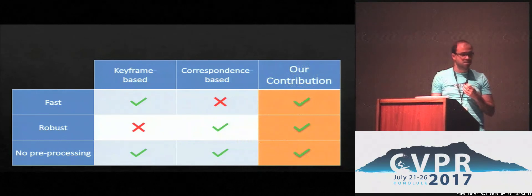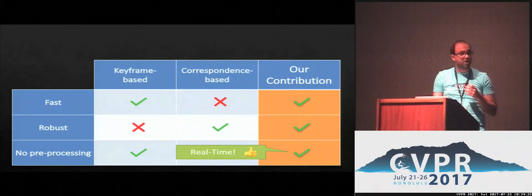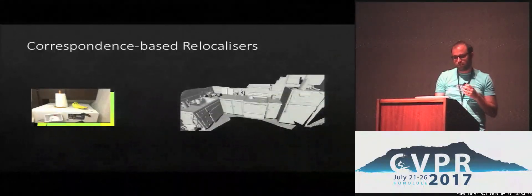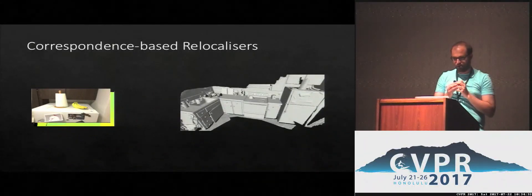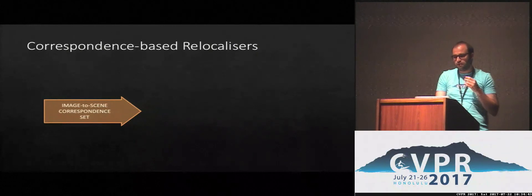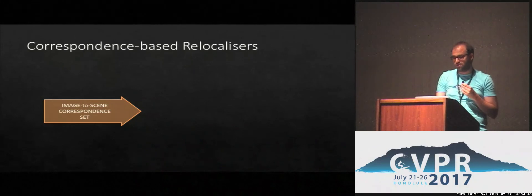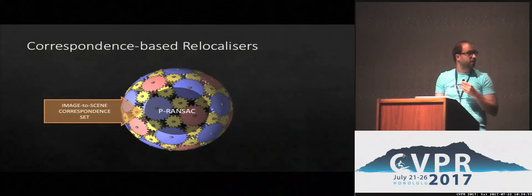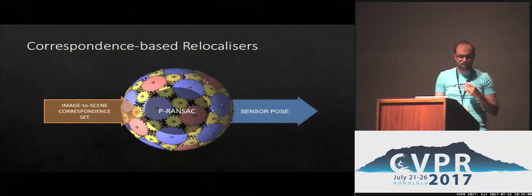Our contribution is a change to the SCORE pipeline which makes it fast and robust with no pre-processing requirements, making it suitable for practical real-time systems. To explain: in correspondence-based relocalizers, you have input image data and a 3D scene, and the first task is establishing a set of image-to-scene correspondences. Once you have those correspondences, the rest of the camera pose estimation steps are mechanical — you feed the correspondence set to a RANSAC variant, in our case pre-emptive RANSAC, and out comes your pose.